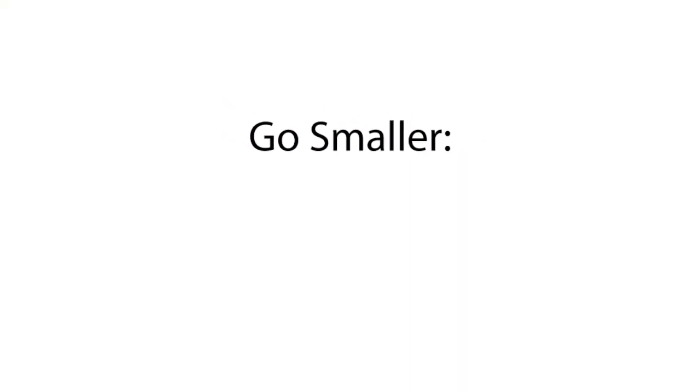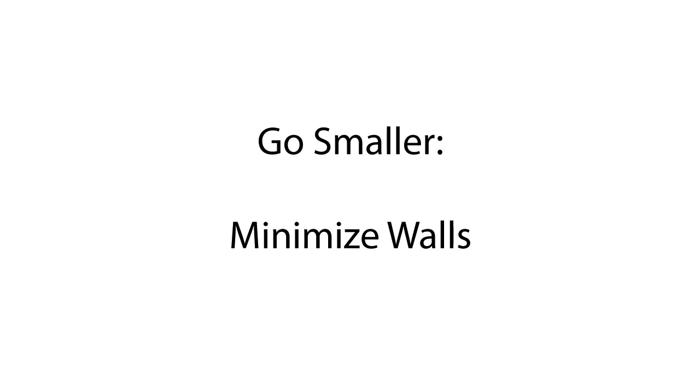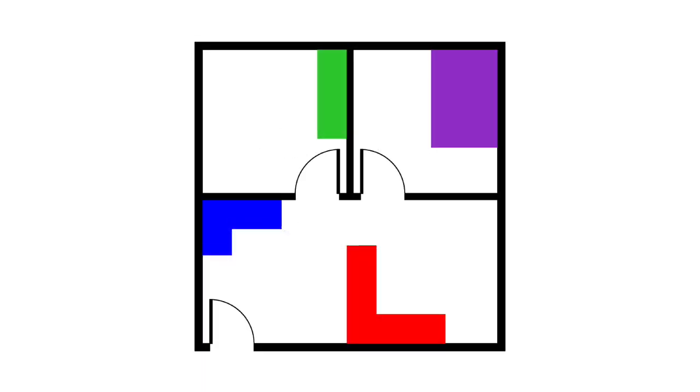My first tip for going smaller is simply to minimize the walls. So here we have a typical cabin layout divided into separate spaces. Now if we remove the walls, and move our elements to the outside edge, we can actually reduce the footage by half and still fit all of our functions comfortably in there.